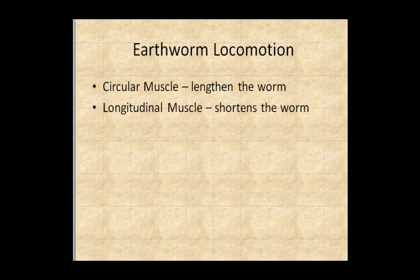How do they locomote? They have two types of muscles. Circular muscles, when contracted, lengthen the worm. Longitudinal muscles, when contracted, shorten the worm. Think of the inchworm motion: circular muscle contracts and the worm goes forward and stretches out straight; longitudinal muscle contracts and it bunches up.